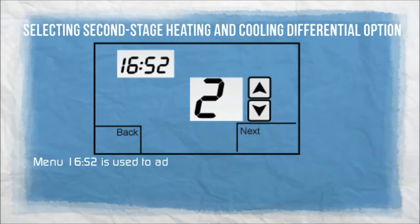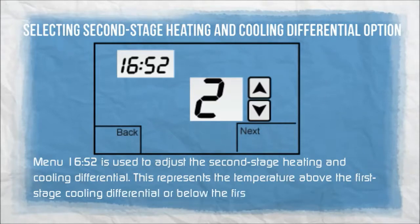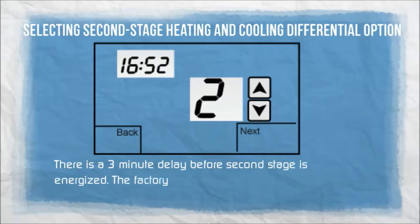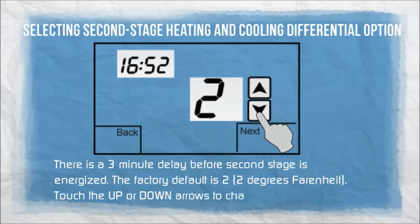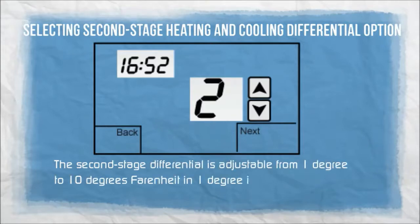Menu 16S2 is used to adjust the second stage heating and cooling differential. This represents the temperature above the first stage cooling differential or below the first stage heating differential when second stage is energized. There is a three-minute delay before second stage is energized. The factory default is two degrees Fahrenheit. The second stage differential is adjustable from one degree to ten degrees Fahrenheit in one degree increments.